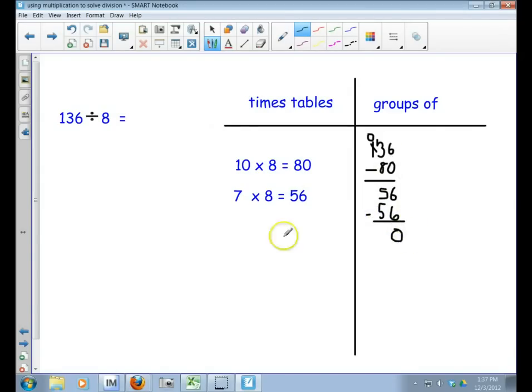So that means I've gotten as close as I can. Now let's add those up: 17 times 8. Let me add: 6 plus 0 is 6, 8 plus 5 is 13, so 136. I've got my original answer.